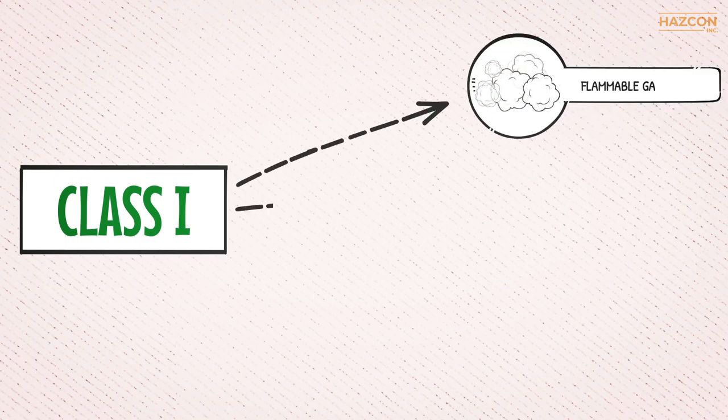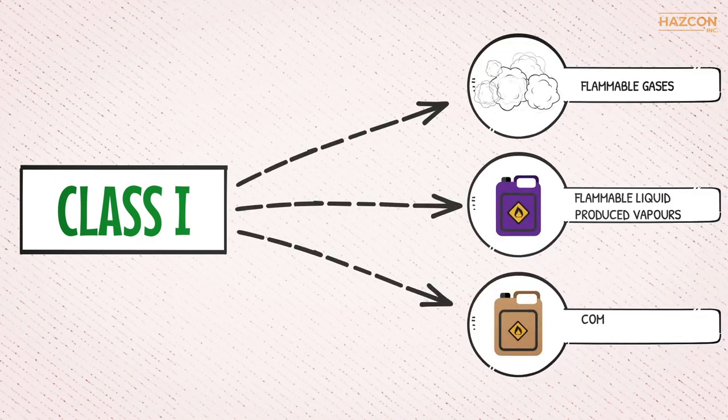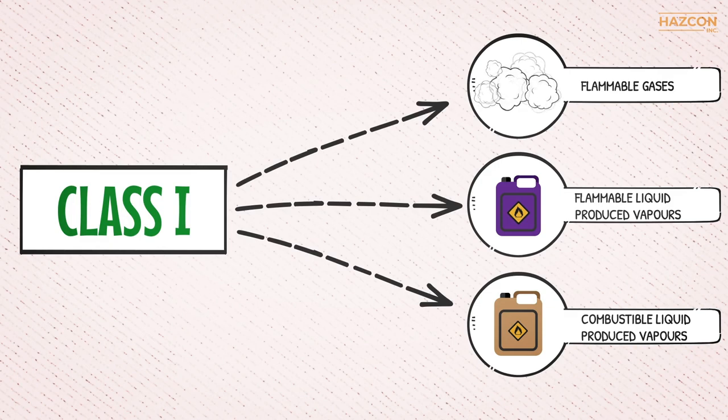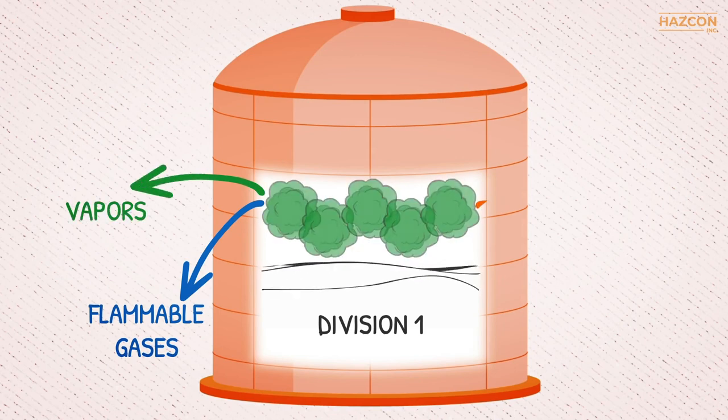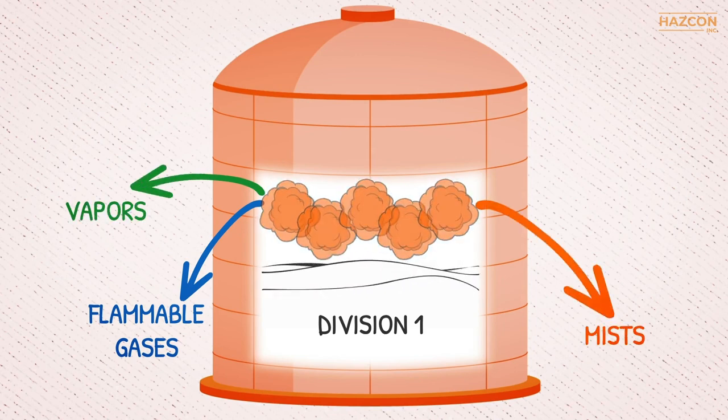Class 1 means that the location contains flammable gases, flammable liquid-produced vapors, or combustible liquid-produced vapors. Division 1 refers to an area in which these dangerous concentrations of flammable gases, vapors, or mists exist continuously for long periods of time or frequently under normal operating conditions.